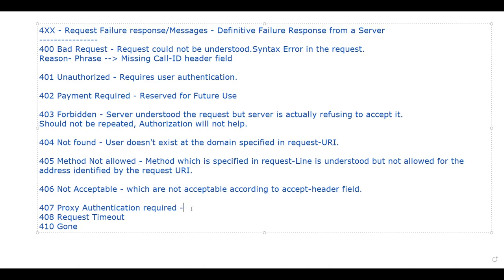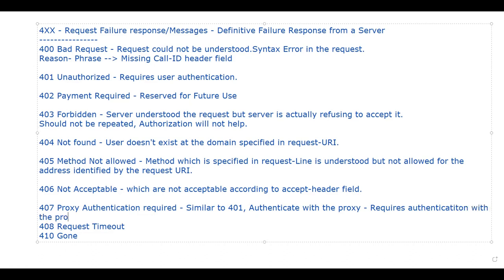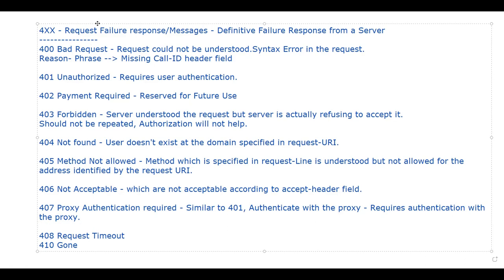Then we have 407 proxy authentication required, which is similar to 401 — which requires user authentication. It indicates that the client must first authenticate itself with the proxy. Simply put: it requires authentication with the proxy. It's essentially the same as 401, just a change in who is doing the authentication — here it's with the proxy server.